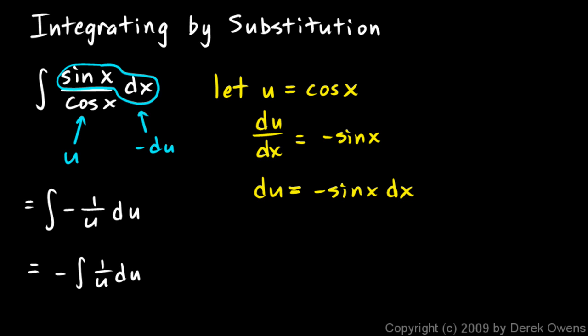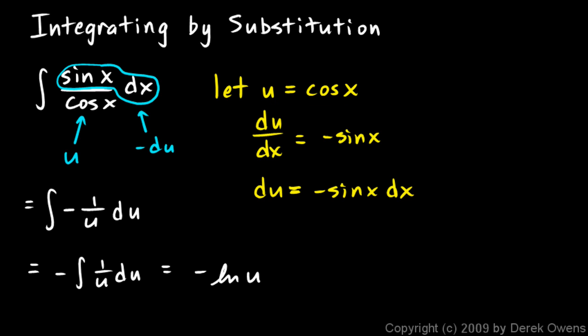We can write this as negative of the integral of 1 over u du. We know that the integral of 1 over u is the natural log of u, so I write negative natural log of u. My original integral was stated in terms of x, so I substitute back: since u was defined as cosine x, this becomes negative natural log of cosine x.